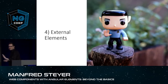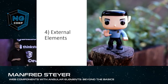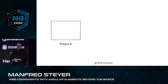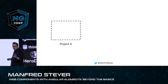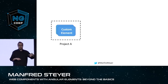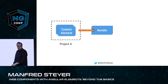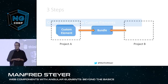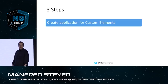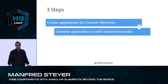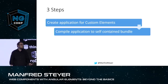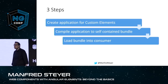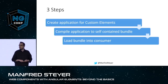Let's talk about external elements. This is where I try to push the limitations of what is currently officially supported. When I speak about external elements, it is about having a first project with some custom elements — your widgets or the things you need for your design system. Then I want to compile those elements to a bundle, and after that I want to reuse this bundle with several other projects by loading it. We need to create an application that just contains the custom elements, compile everything to a self-contained bundle, and then load that bundle into our consuming application.